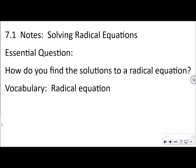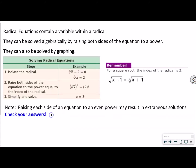What I want to talk about is what is a radical. This is what we call a radical. The one we see here is a square root, and if we put a 3 here, that's a cube root. Radical equations contain a variable within a radical, meaning the variable is underneath that radical. They can be solved algebraically by raising both sides of the equation to a power that coincides with whatever the index is.